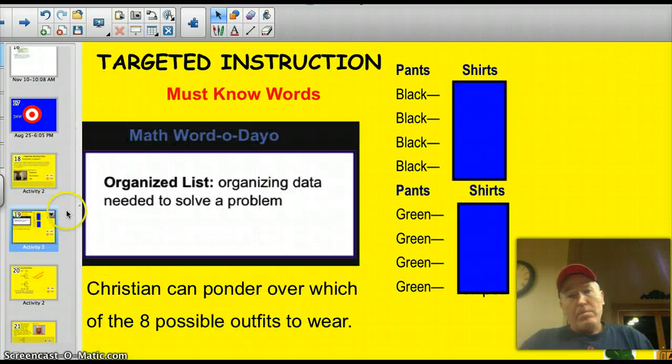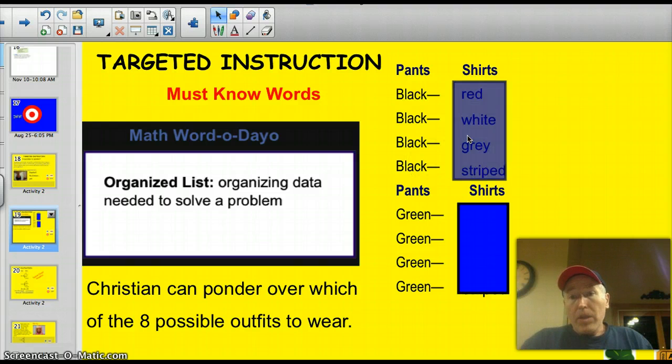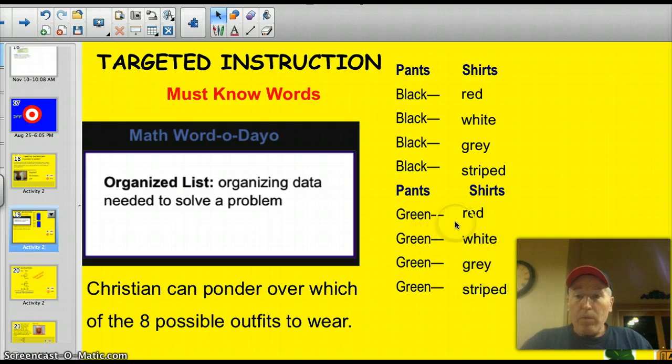All right, enough fun and games. So, in order to solve this problem, you have to understand what an organized list is. It's any way that you come up with to share or to organize the data so that you can provide the answer to a question. So, here's one way of doing it. You know he's got black pants and he's either going to wear black pants or green pants. So, I just put down black, black, black, black. Because he's got four shirts, right? Well, he could wear the black with the red, the black with the white, the black with the gray, or the black with the striped. He could also wear the green with the red, the green with the white, the green with the gray, or the green with the striped. You get the idea. Christian can ponder over which of the eight possible outfits to wear.